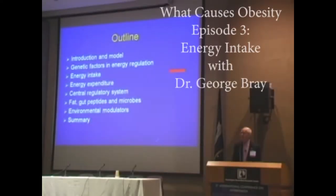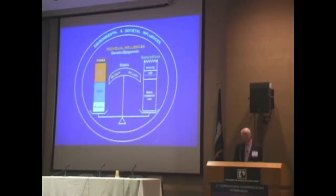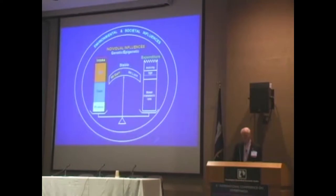Obesity occurs because you have more energy going in over time than you're expending. You're storing that extra carbon as fat, and that's what obesity reflects. It's a chronic relapsing disease which has a neurochemical basis. I wanted to spend a few minutes on the intake side, a few minutes on the energy expenditure side, and then talk about the regulatory components.